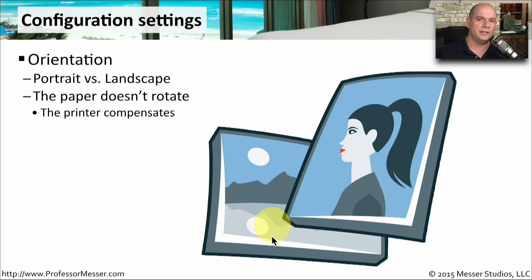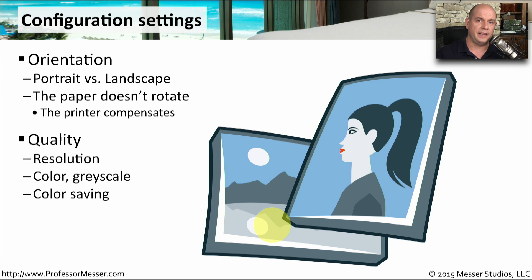What's interesting is that the printer is not physically changing the direction of the paper — it's simply changing how it's going to print on that paper. You need to decide how you want your output to look and what orientation it's going to take. Some additional important settings deal with the quality of the output: you can change the resolution of the image being printed, decide whether to print in color or grayscale, and on some printers you can save ink by putting the printer into a color-saving mode.